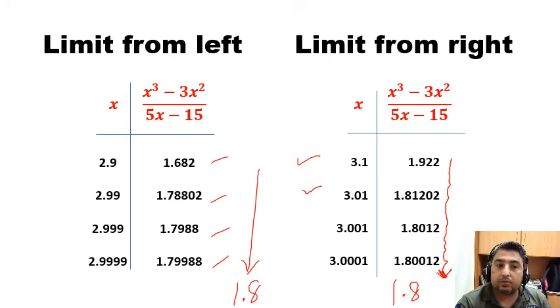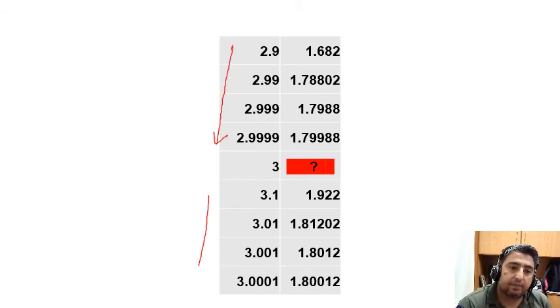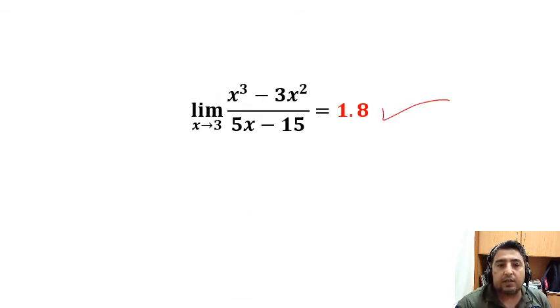Just combine these values. These values of x are going to 3, and these are also going to 3. This is going to 1.8 and this is also going to 1.8. So we can say that the limit of this function is equal to 1.8, looking at the tabulated values. I hope it's clear.